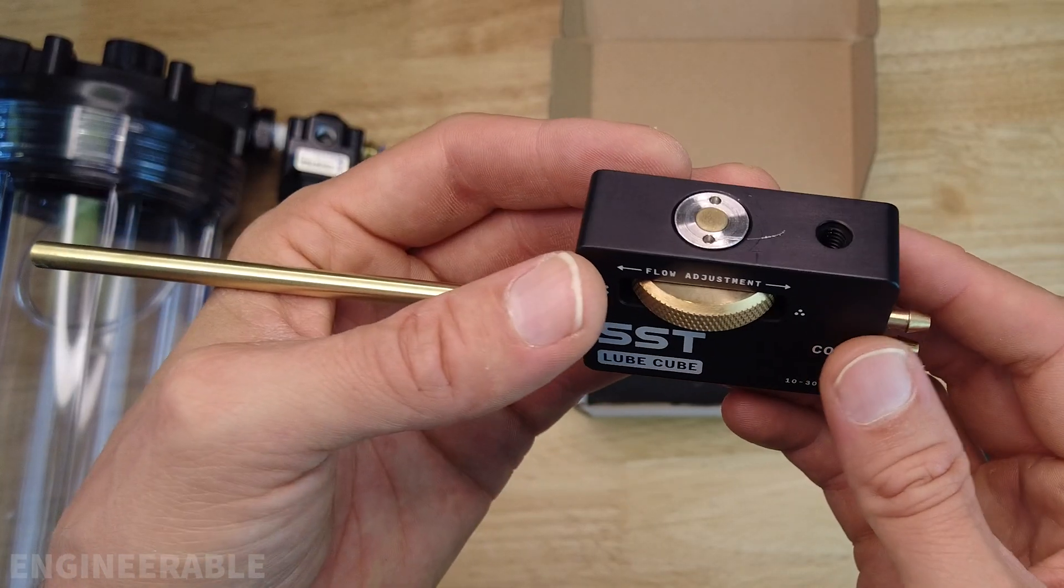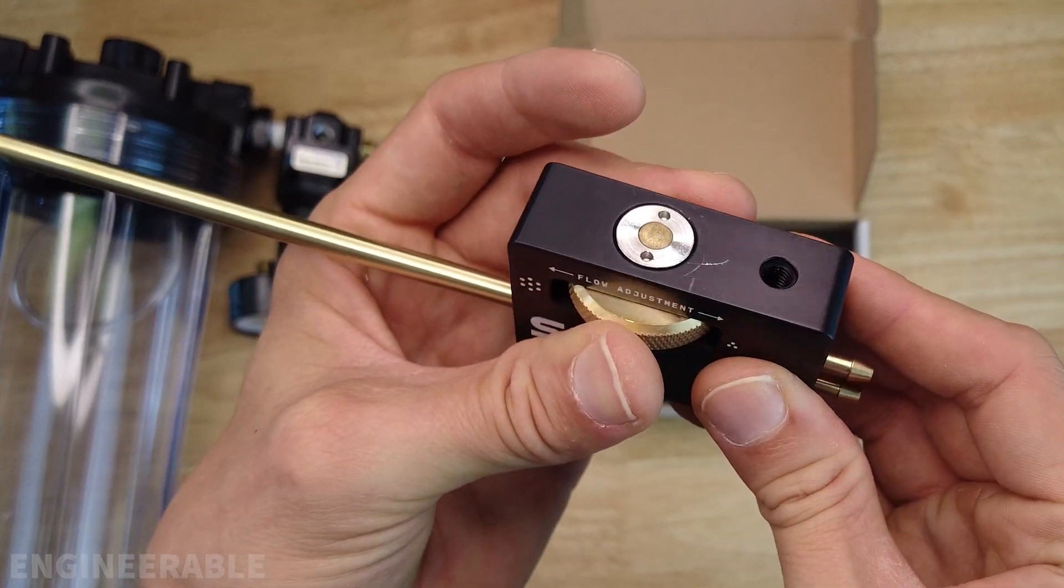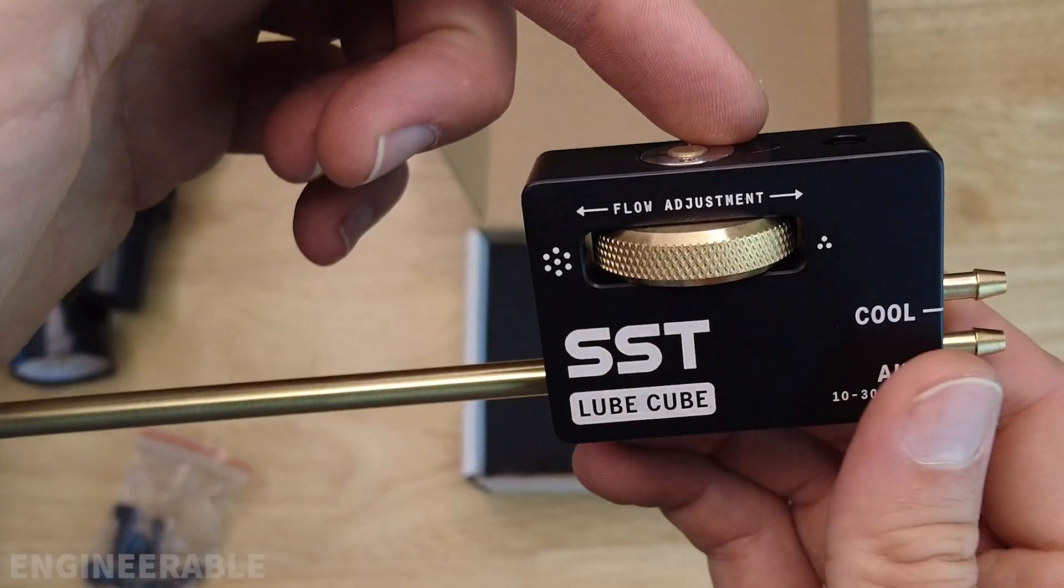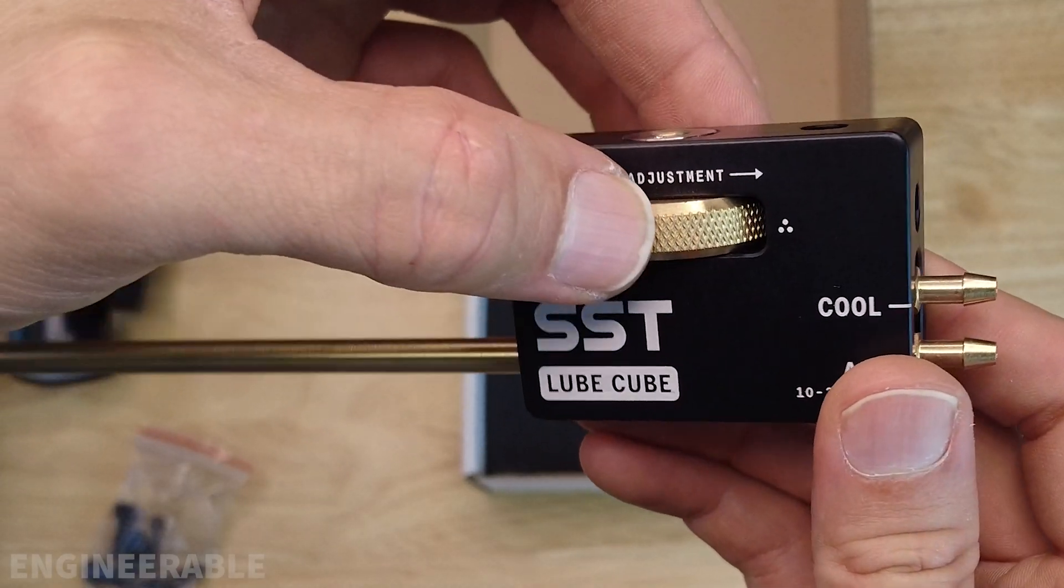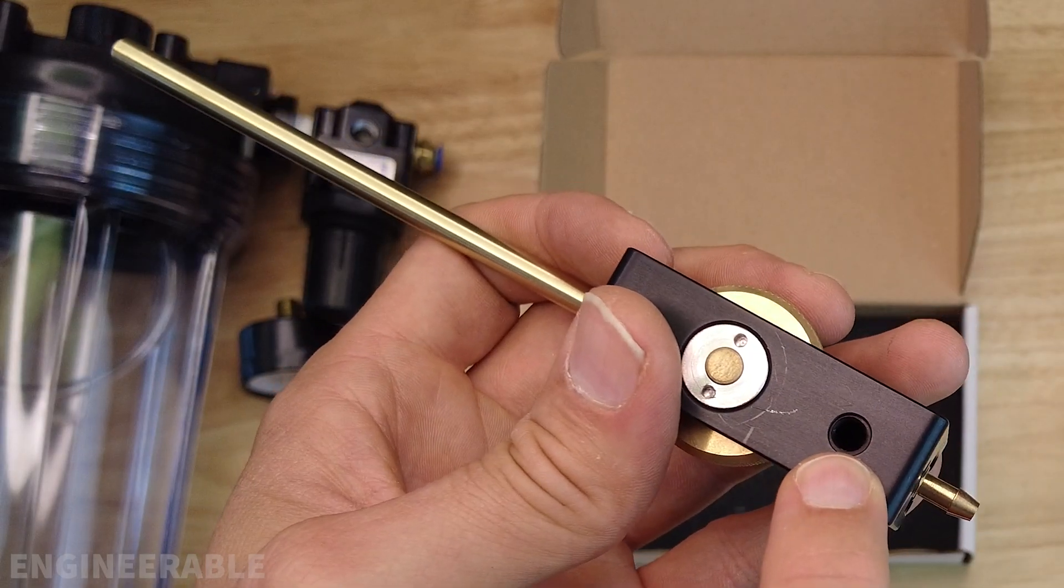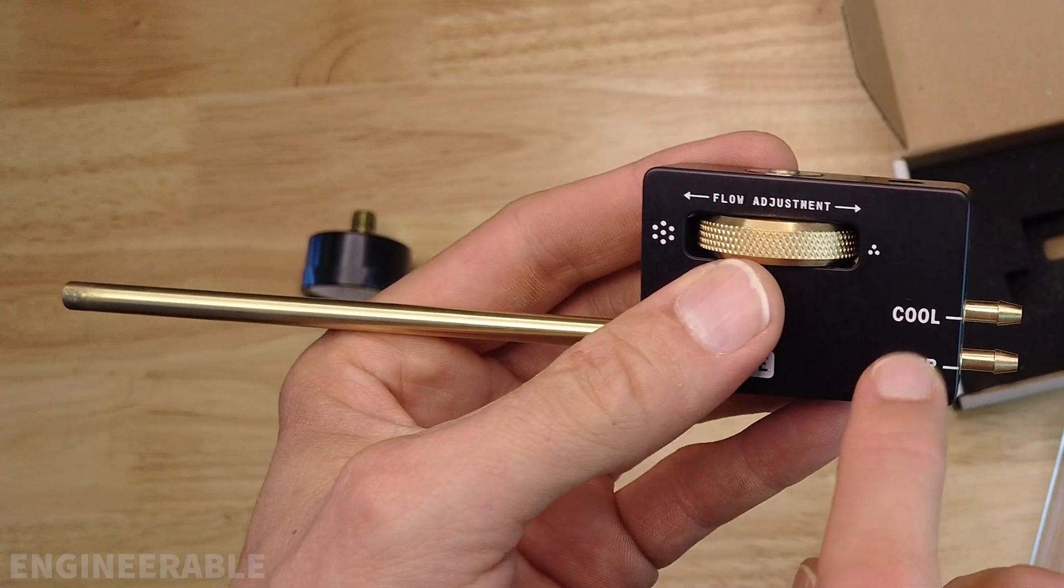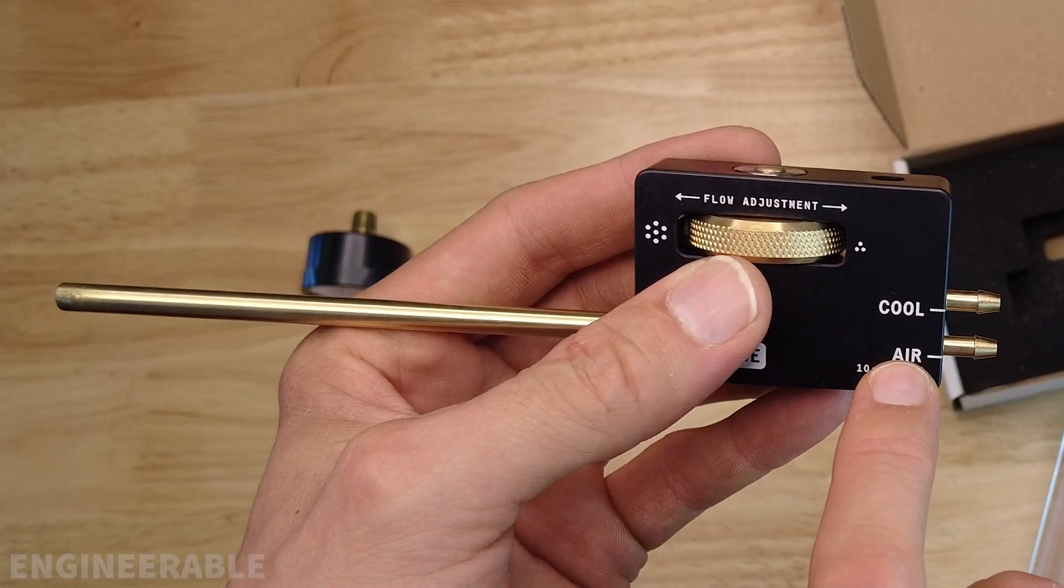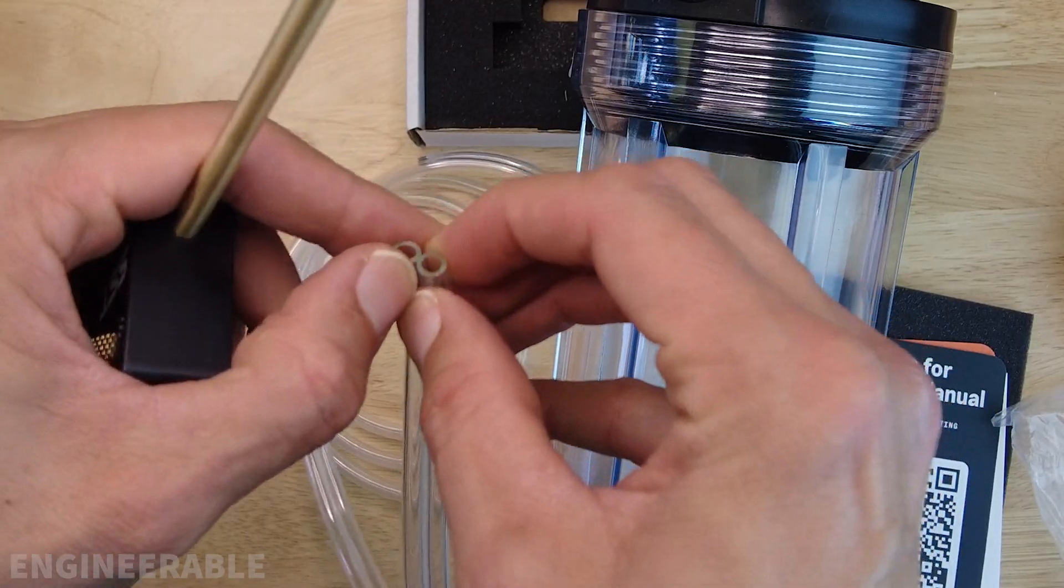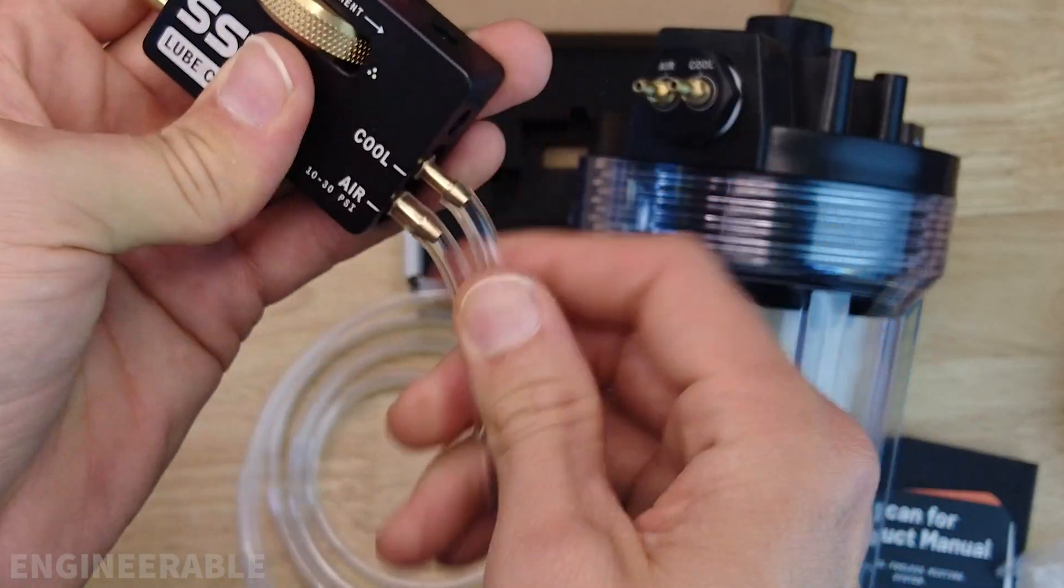One thing that reviewers mentioned comparing this to the Fogbuster is that the flow adjustment knob is a lot nicer and more precise than the Fogbuster. The Fogbuster just has a very small thumb screw on top, so this allows for more precise adjustment. There are two mounting positions—one at the top here and one on the back. This one has a set screw in it. The airline connections are well labeled so you have the cool and the air. It's going to be easy to connect those to this hose. You just need to split the hose a little bit near the beginning. Plug the bottom one into the air and top one into the coolant.